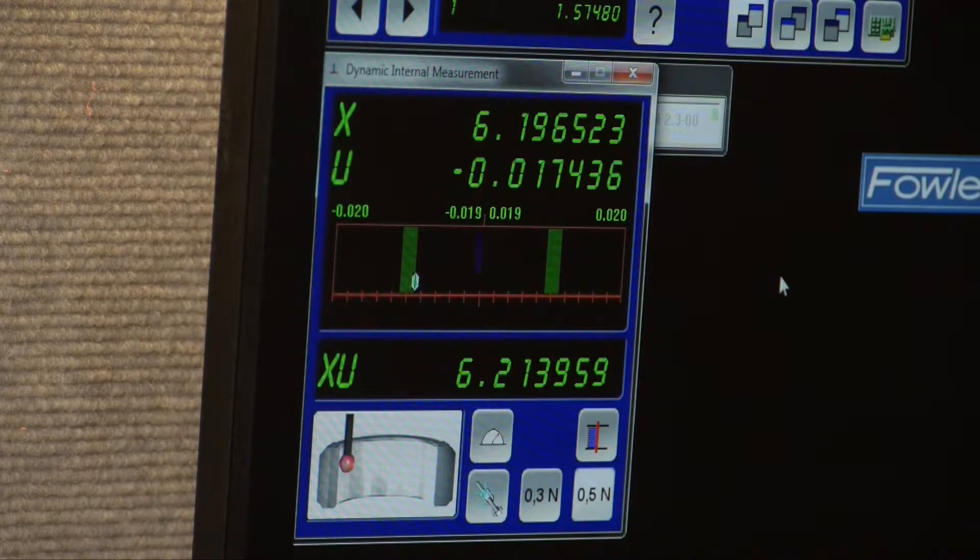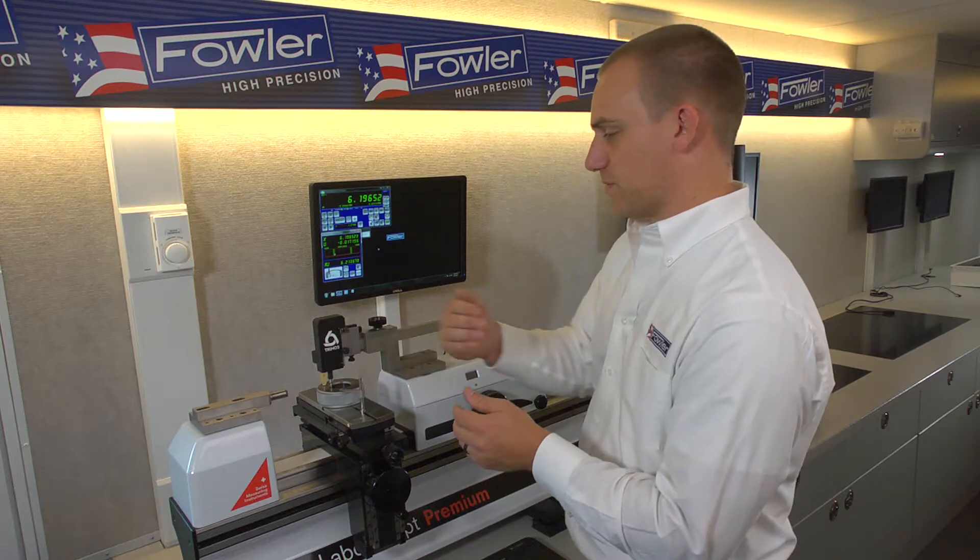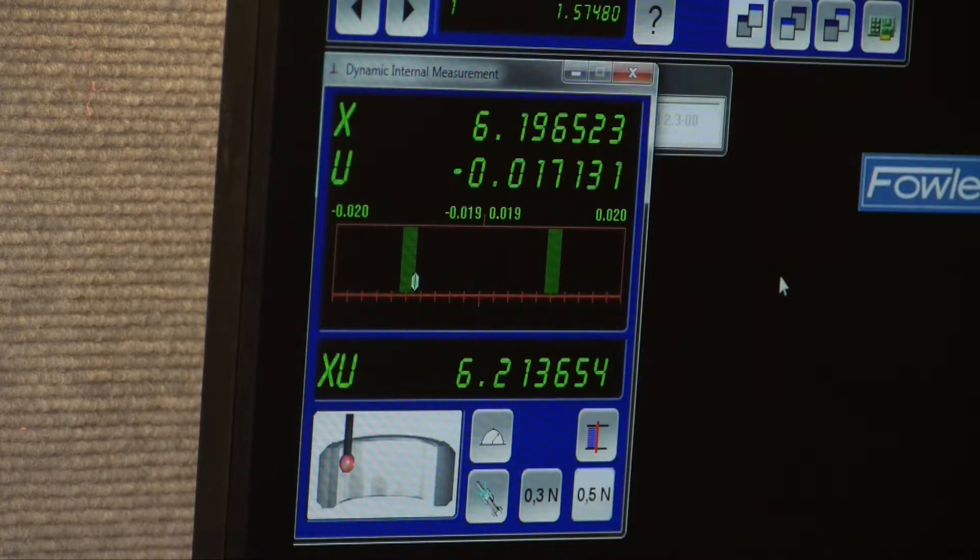It doesn't matter what the number is here. We're going to be taking a relative measurement left to right. We just want to find the lowest number available. I think that's our left side low measurement.